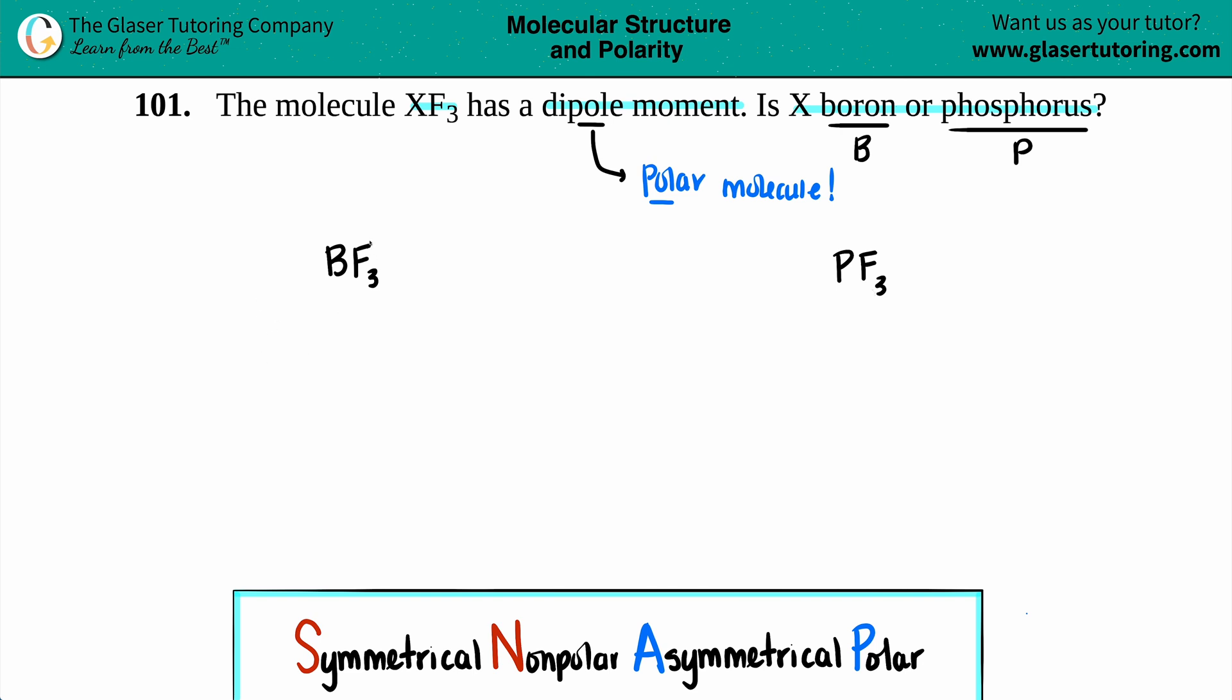Alright, so let's go. Fluorine is the most electronegative element, so fluorine is never in the middle. So in this case, boron has to be in the middle, surrounded by the three fluorines.